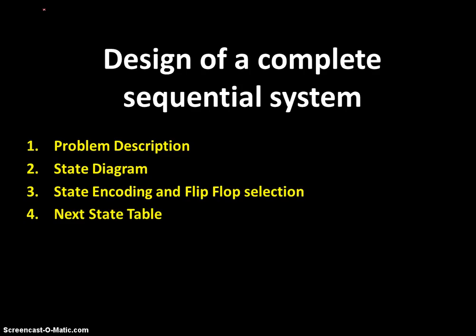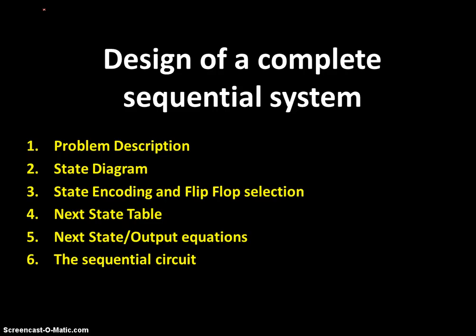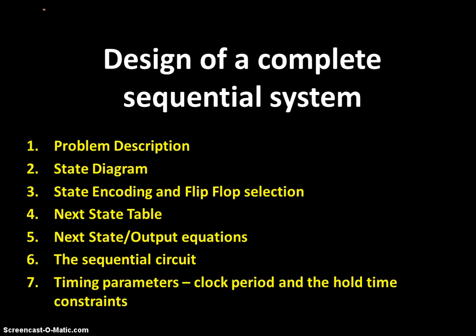We'll create a next state table. From that next state table, we'll derive the next state logic and the output logic. Using that, we'll create a sequential circuit. After we've created the sequential circuit, we'll look at the different paths and decide on timing parameters such as the setup time constraint, which decides the clock period, and the hold constraints. Finally, we'll look at how we might generate that needed clock frequency.